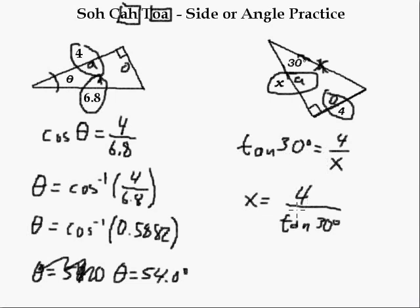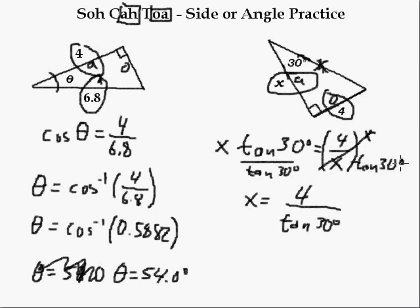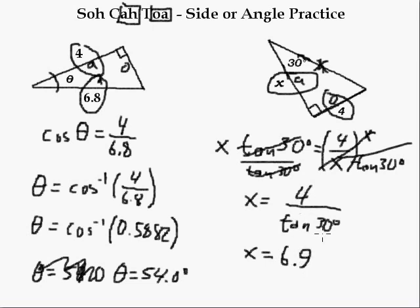Once you start practicing a lot, this is going to start to make sense and you can just go to this step. But until you've practiced a lot, keep using your brain. Think about what you're actually doing — you're multiplying both sides by X, the X comes up, these cancel out, and then I divide both sides by tan of 30. So you end up with 4 over tan 30, and that happens every single time. You're going to be dividing by the sine, cosine, or tan. Punching this in the calculator: 4 divided by tan 30 equals. The calculators that let you just punch in 4 divided by tan 30 are easy to work. Hopefully you've got one of those.